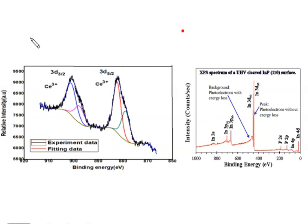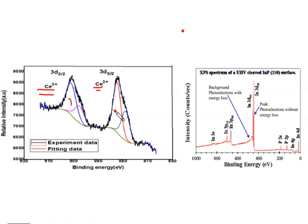This is how an XPS spectrum looks like. All the peaks in the P, D, and F subshells get split into two due to spin-orbit coupling. For Cerium 3+ there are two peaks for the same electron due to splitting. To identify these peaks, we calculate the area under the peaks and find the ratio of the areas. Here the ratio is 2:3.